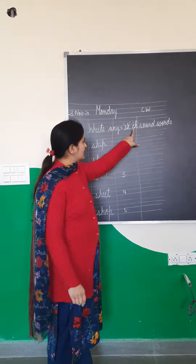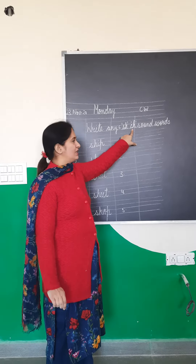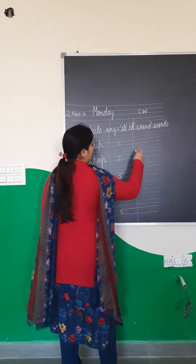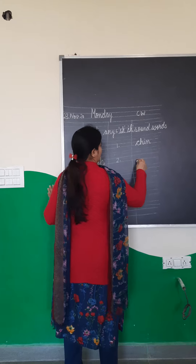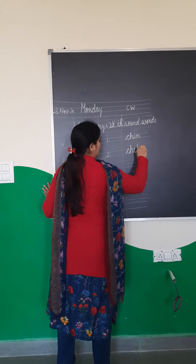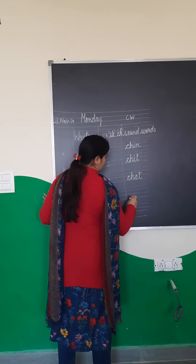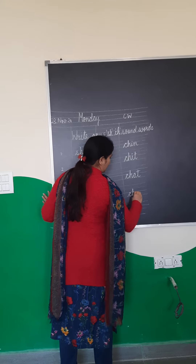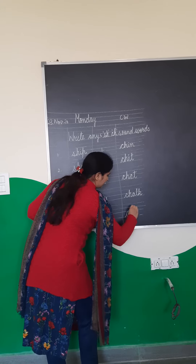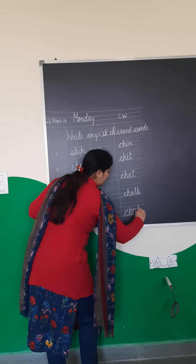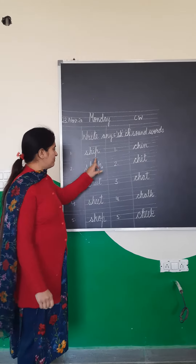'ch' says 'ch'. Okay, my first word is 'chin'. Next word is 'chick' — C H I T — 'chick'. Then 'chan' — C H A N — 'chan'. And 'cheek' — C H E K — 'cheek'.